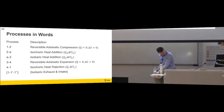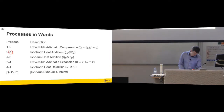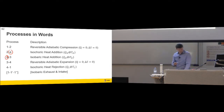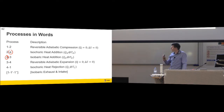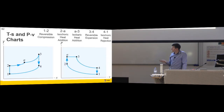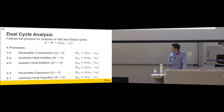Just to keep the numbering the same as the Otto and the Diesel, rather than introduce another number and throw the rest out of order, they're just putting in a letter, so that process four and five — state point four and one — are the same. That's what it looks like on the PV and TS charts.